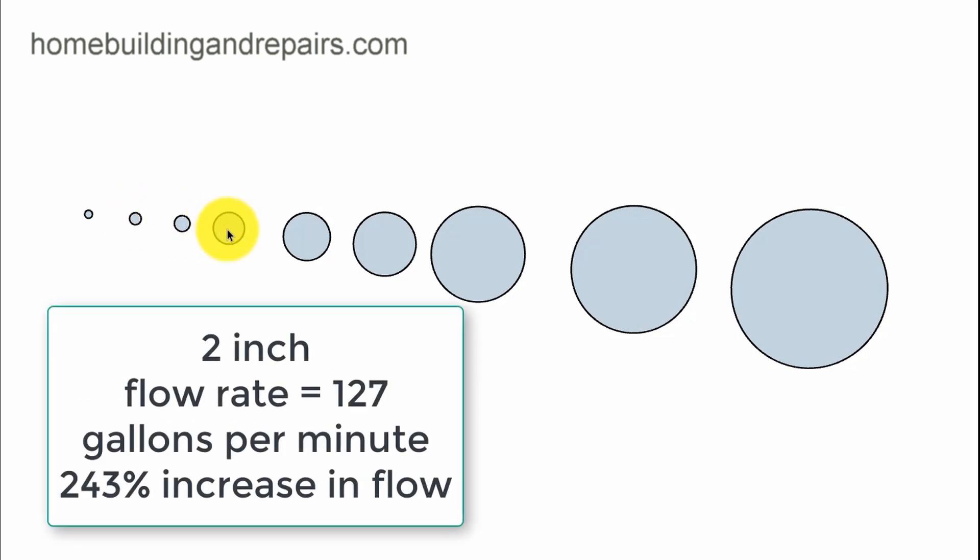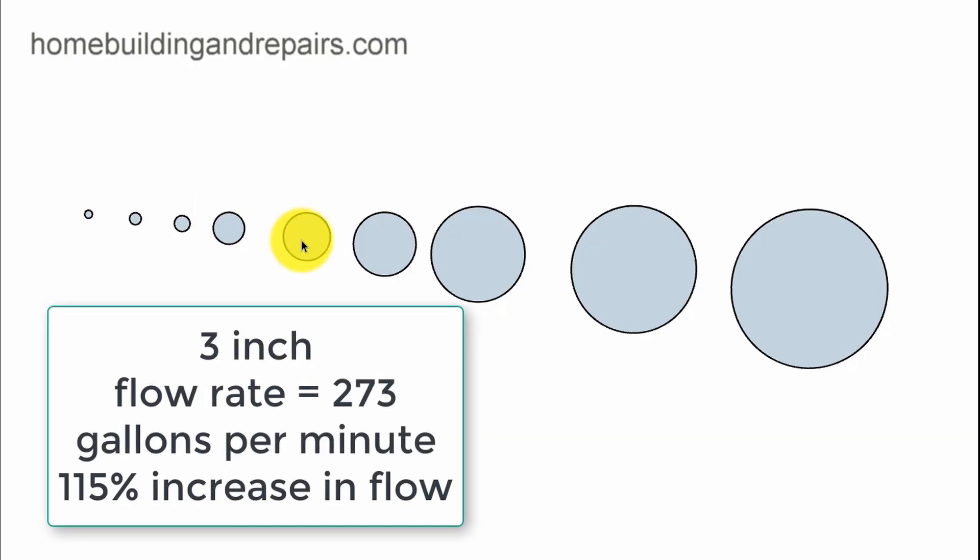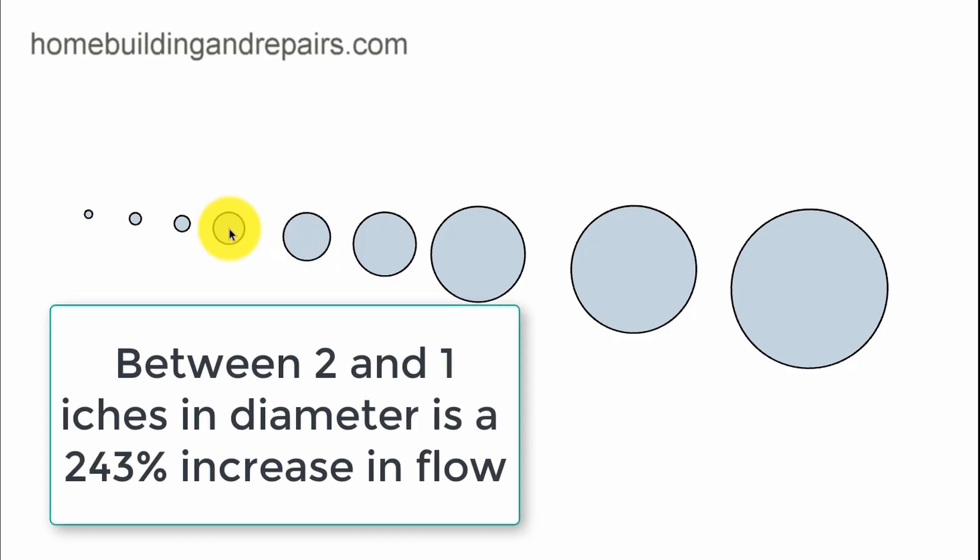Once we go to a 2-inch pipe, we are now increasing the amount of volume from a 1-inch to a 2-inch by 243%, or 127 gallons per minute. When we go to the 3-inch pipe, it's 273 gallons per minute. Remember, we're working with their PSI measurement. You increase the PSI or you lower it, you're going to get different numbers. But the difference between these two is now 115%. The biggest increase so far was between the 2-inch and the 1-inch pipe.